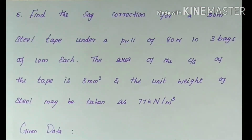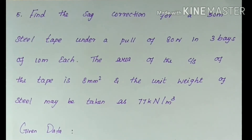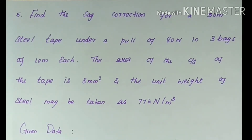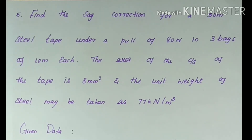First, I will read the problem. Find the sag correction for a 30m steel tape under a pull of 80 N in 3 bays of 10 m each. The area of the cross section of the tape is 8 mm². The unit weight of steel may be taken as 77 kN per m³.